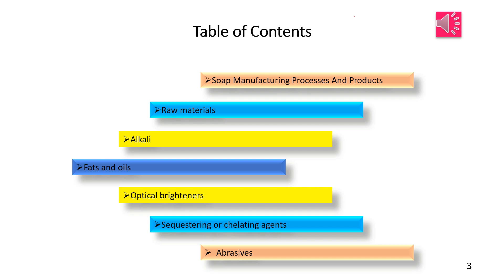Sequestering or chelating agents are added to soap to eliminate water hardness and heavy metals such as iron and copper, which affect the cleaning process. These agents bind polyvalent cations such as calcium and magnesium in water and in fibers, preventing the precipitation of soap.